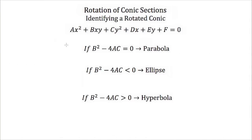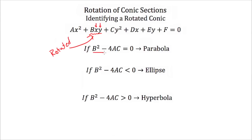Now there's a slightly different equation for when our conic section is rotated. Here is the general form of our rotated conic section. It's very similar — we still have ax squared, cy squared, dx, ey, plus f, all equal to 0. The only addition is this b times x times y term. Whenever you have an x times y term, this is the hint that this conic section is rotated. If you want to find out what type of conic section it is, the discriminant is b squared minus 4ac. If that equals 0, you have a parabola; if it's less than 0, you have an ellipse; and if it's greater than 0, you have a hyperbola.